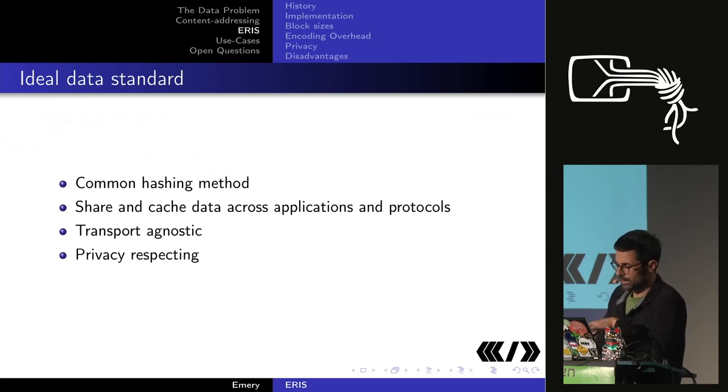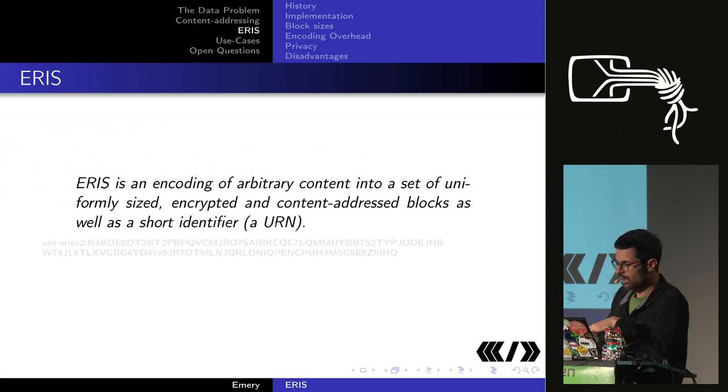So what is an ideal standard for encoding content-addressed data? You should have a common hash function. You want to encode data in a way that can be shared between applications and different protocols. Your encoding standard should not be biased towards any one transport method, and it should be privacy-respecting.